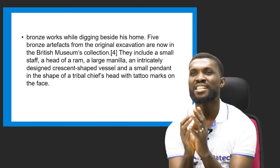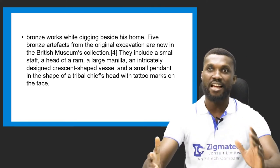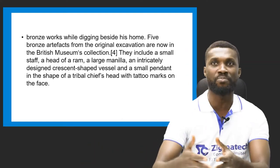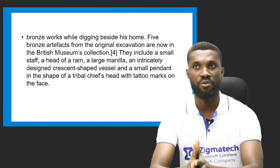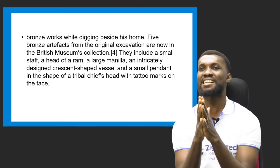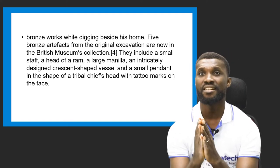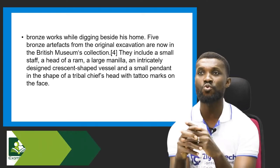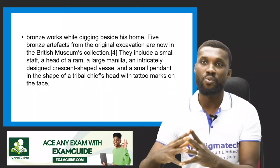Five bronze artifacts from the original excavation are now in the British Museum collection. When the British came, they took some of these things to the museum. They include: a small staff, a head of a ram, a large manilla, an intricately designed crescent-shaped vessel, and a small pendant in the shape of a tribal chief's head with tattoo marks on the face.